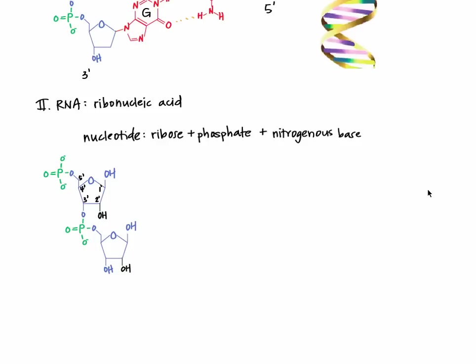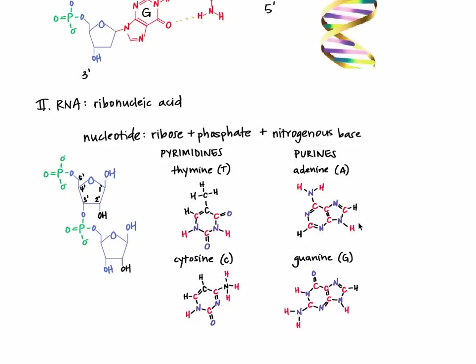The third difference is that RNA uses uracil as a nitrogenous base instead of thymine. Here are the nitrogenous bases of DNA. In RNA, adenine, guanine, and cytosine are exactly the same. But instead of thymine, RNA uses uracil. Here's what uracil looks like. The only difference between uracil and thymine is a CH3 group or methyl group that's bonded to thymine but not to uracil. So take a look again. Here's thymine with the CH3 group. And here's uracil without it.